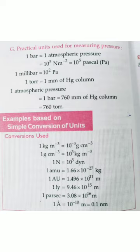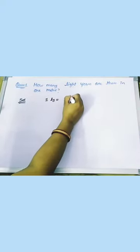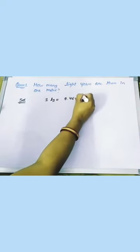Here I have included a picture of simple unit conversions that we will use when solving numericals. The first question asks: how many light years are there in one meter? We know that one light year equals 9.46 into 10 to the power 15 meters, and we need to find how many light years are in one meter.